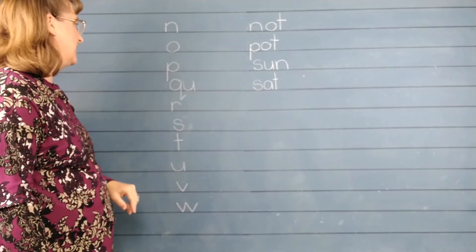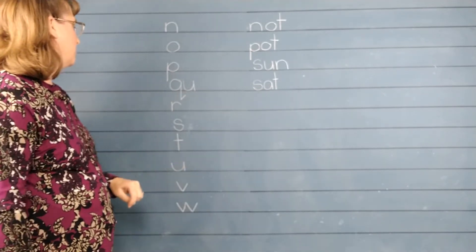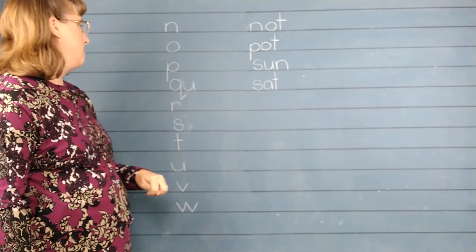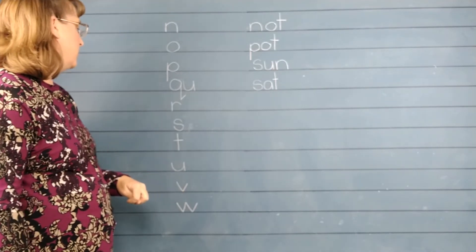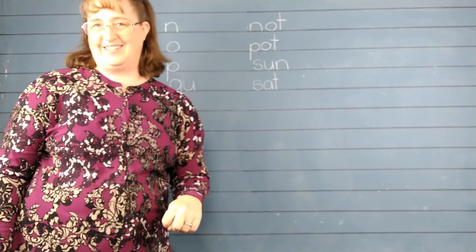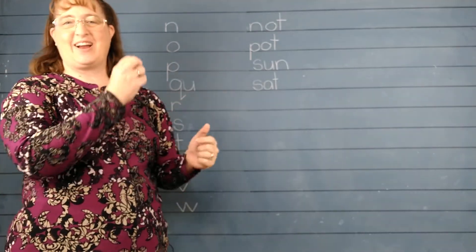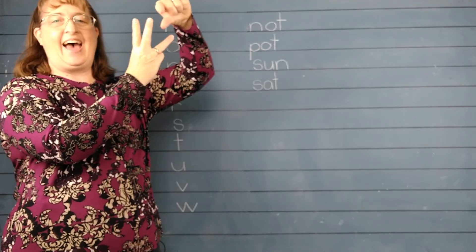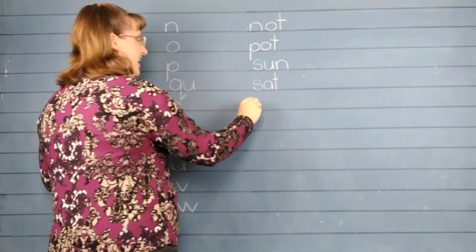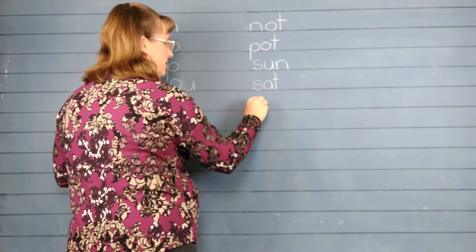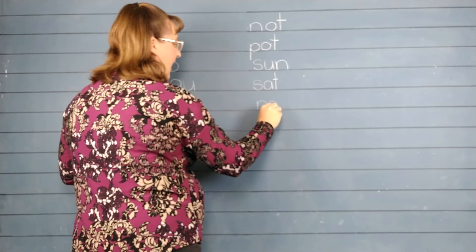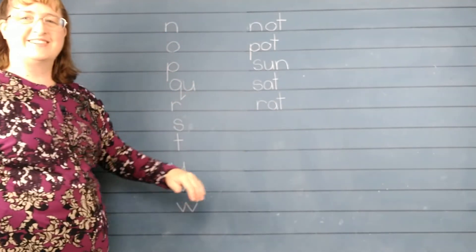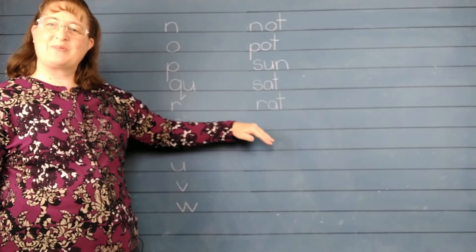Okay. Let's try. Oh, let's see. How about we write rat? Rat. Okay. Let's write rat. Give me the sounds. R-A-T. Sound it out as you write it. R-A-T. Good. Read the word with me. Rat.